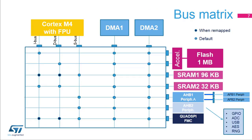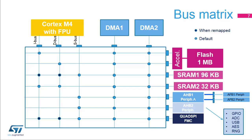Here we have the STM32L4's bus matrix. The bus masters are shown on top, and the Cortex-M4 core and the two DMA controllers communicate with the bus slaves shown on the right via the circled intersections. The flash memory is read through the accelerator. Cortex-M4 instructions are fetched through the instruction bus and literal pools are read through the data bus. SRAM1 is accessed by default via the system bus, and can be accessed through IBUS and DBUS when remapped at address 0, shown by the dark blue circles, in order to increase performance.